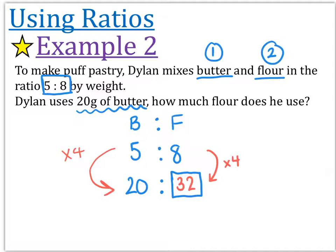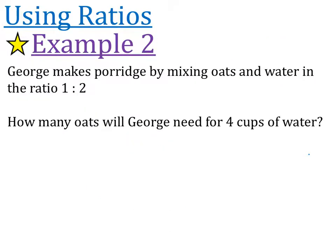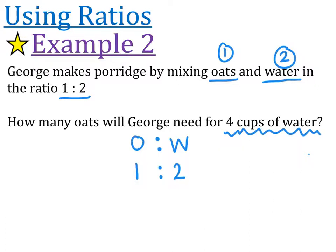Alright, that's it. Let's look at another one. In this example, we're going to make some breakfast. George is going to make some porridge by mixing oats and water in the ratio 1 to 2. How many oats will George need for 4 cups of water? So let's make sure that we start by finding out what are the two things that he's going to mix together. He's going to mix together oats and water. So oats is the first thing and water is the second thing. So we need to put this in the order O to W. And it says the ratio is 1 to 2. So 1 part oats, 2 parts water. In the question they ask us, how many oats will George need for 4 cups of water? So under the W, we're going to put the number 4. And they say, what is going to go in this space here? How many oats will he need?